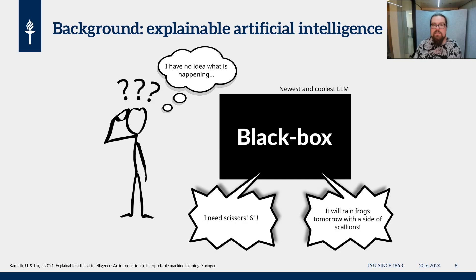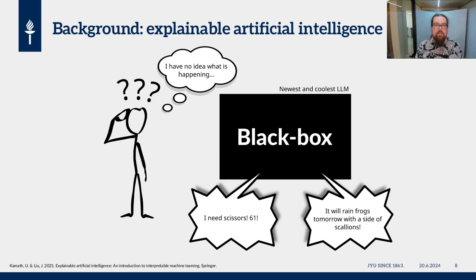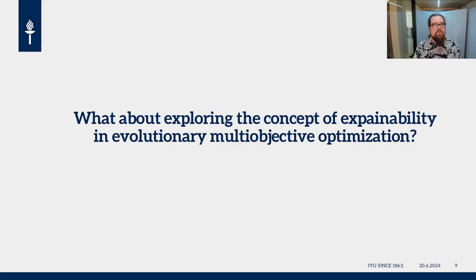One more topic before we discuss the actual method proposed in my paper. The sub-field of artificial intelligence known as explainable artificial intelligence aims to research new AI or machine learning models that are more interpretable and more explainable, or to find new methods to make existing models more interpretable by humans. Many powerful machine learning models tend to look like black boxes, so we don't fully understand how they make their predictions. One can argue that if we want to make good decisions, it is questionable at best to rely on these kinds of black boxes. So, could we take the concept of explainability and explore it in evolutionary multi-objective optimization? I think we can.